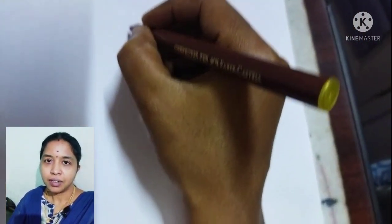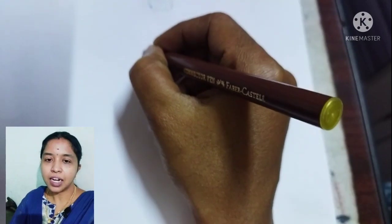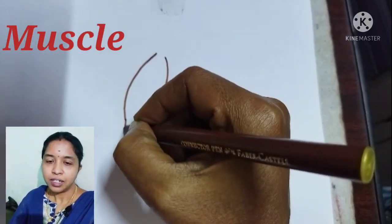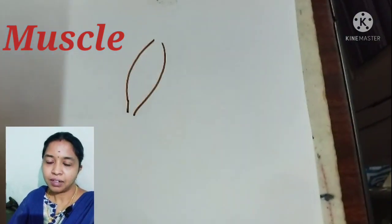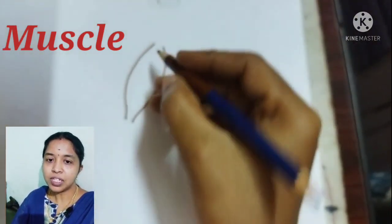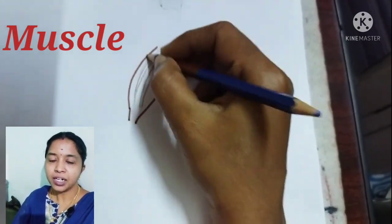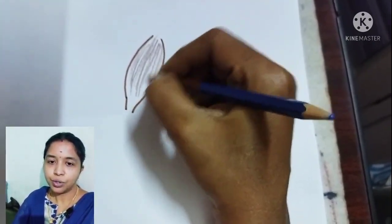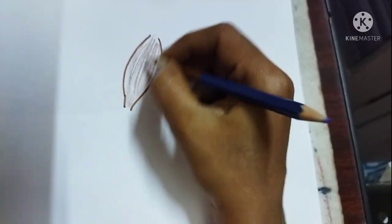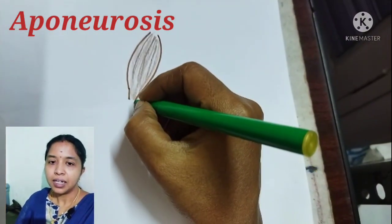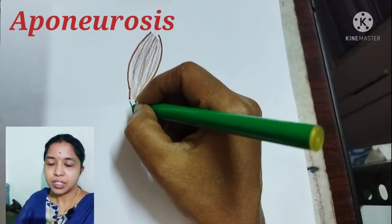First we are going to see the color for the muscle. We are using the brown color. We can use the brown color sketch to draw the outline of the muscle, and to shade inside the muscle we can use the brown color pencil.